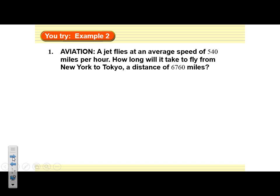Let's take a look at another one similar to that. This one's about a jet involving aviation. A jet flies at an average speed of 540 miles per hour. How long will it take to fly from New York to Tokyo, a distance of 6,760 miles? Well, if we do a similar sort of setup using the same formula since we're talking about speed, distance, rate, and time, we're going to set up distance equals rate times time and plug in what we already know. We know the distance is 6,760 miles, we know the rate is 540, but I don't know the time, so I'm just going to keep t as my variable here.